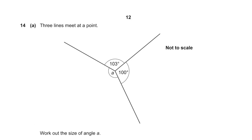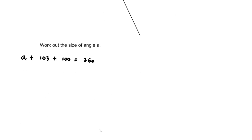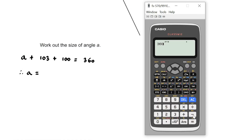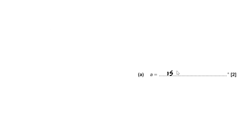Question 14. Three lines meet at point A. Angles around a point equal 360°, so A + 103 + 100 = 360, giving A = 157 degrees.